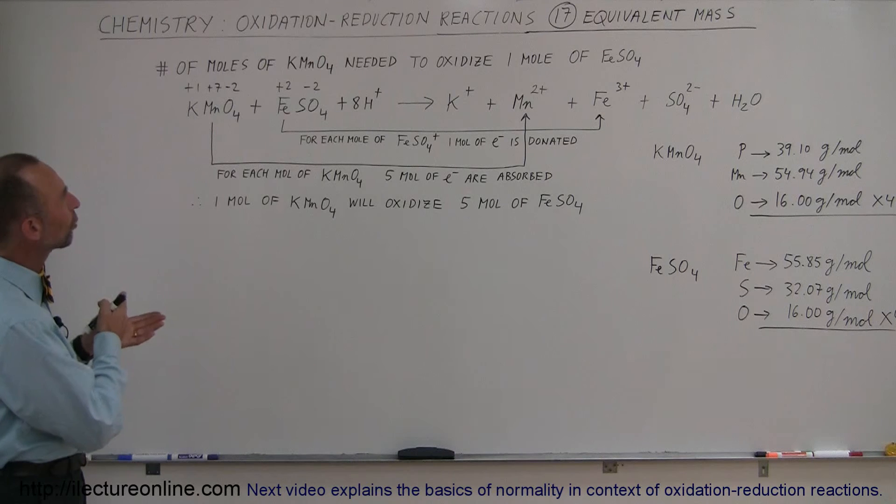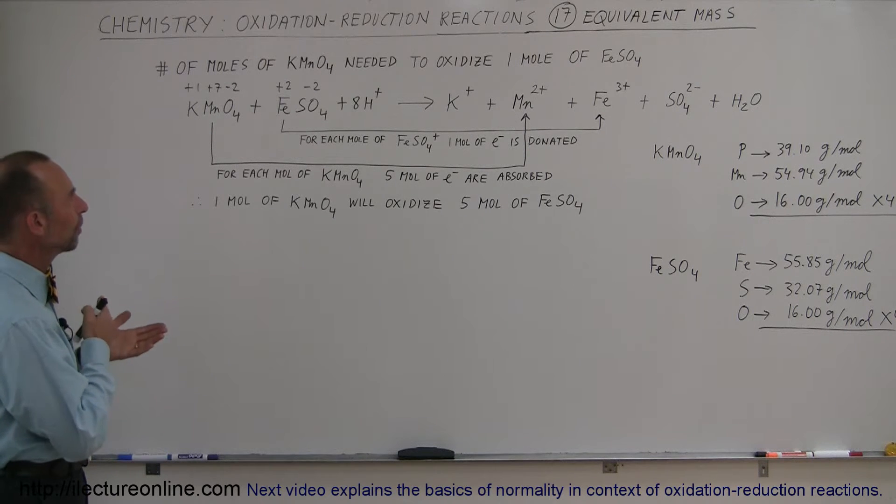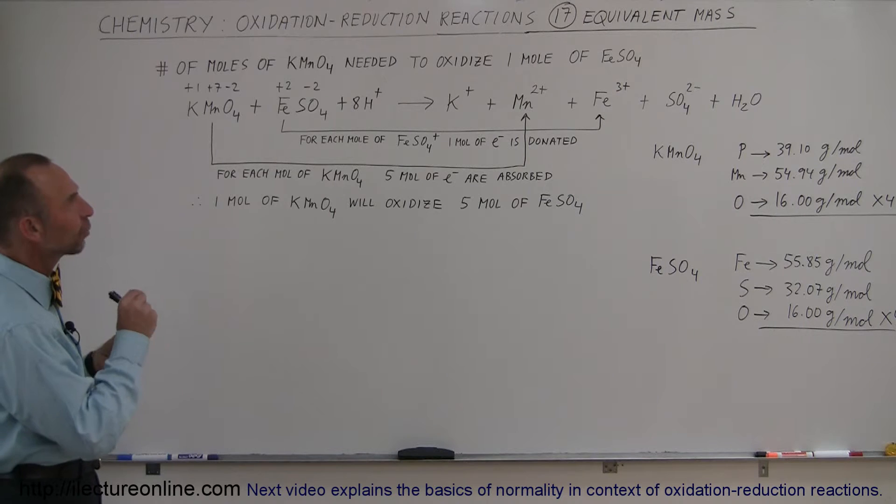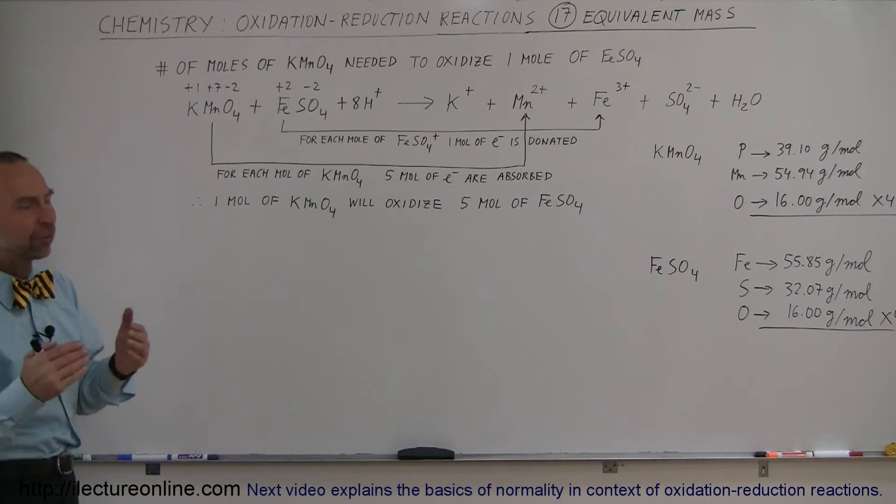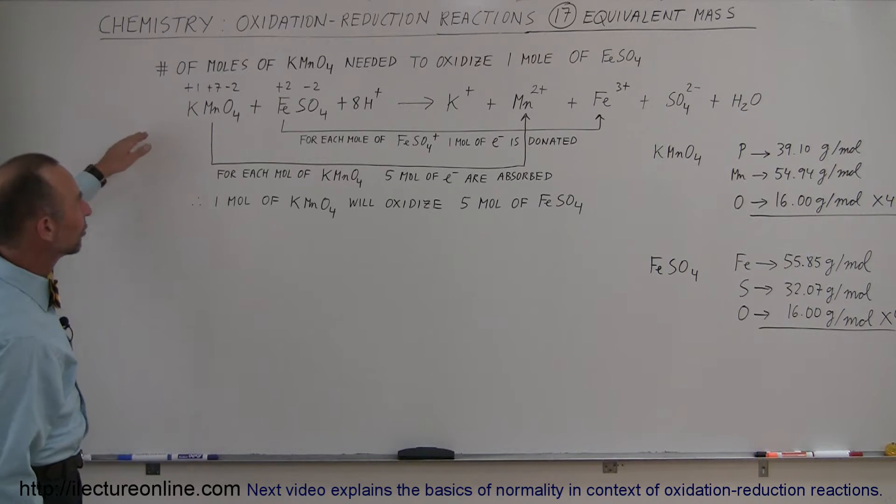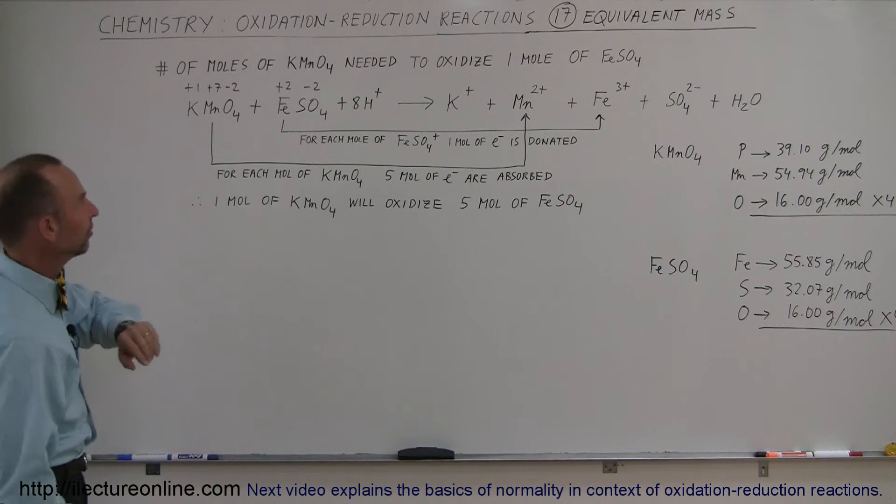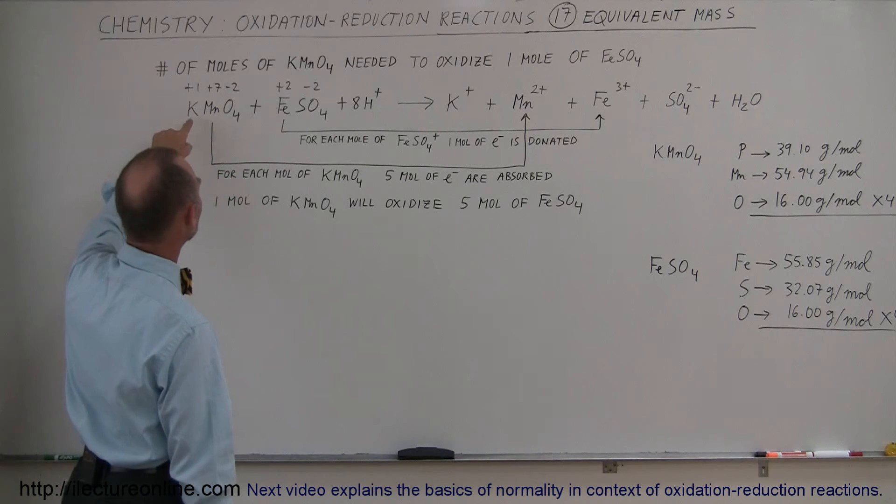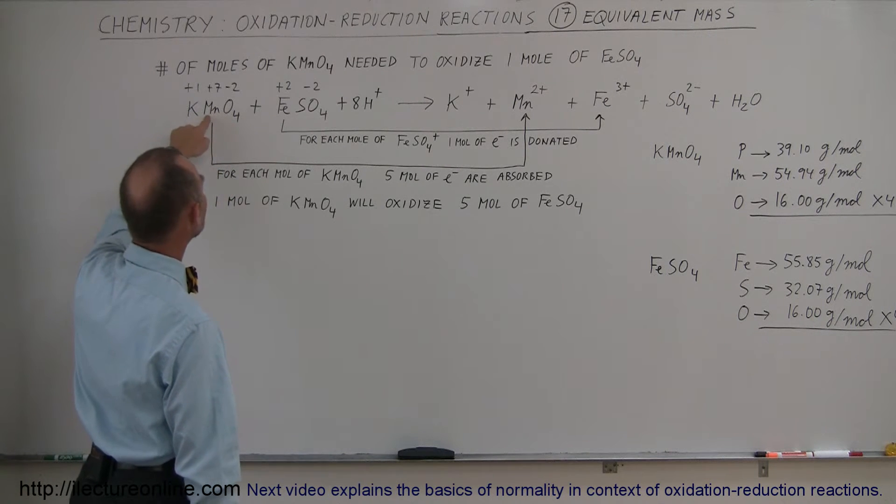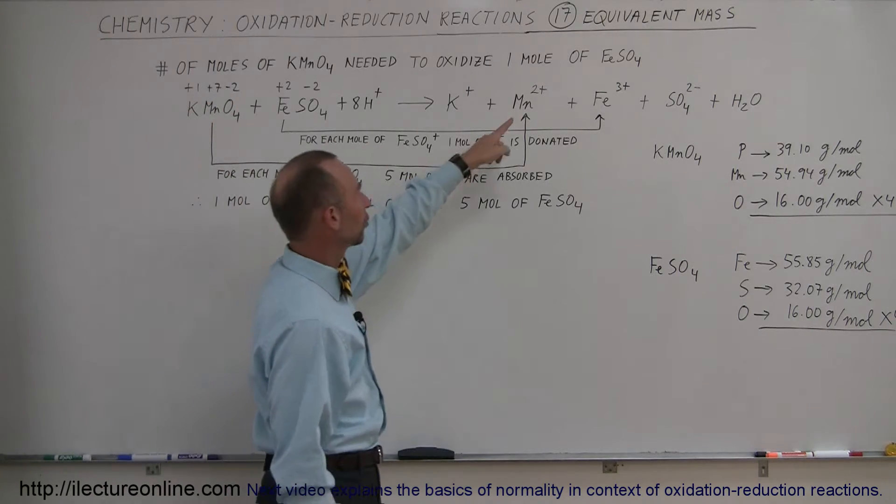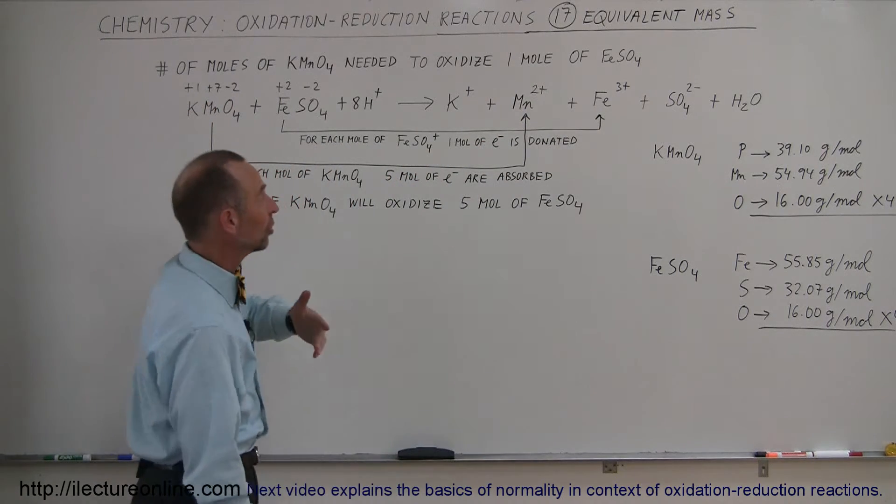The question is: how many moles of potassium permanganate are needed to oxidize one mole of iron sulfate? As we saw in the previous example, here's the unbalanced reaction. You can see that for the potassium permanganate, the manganese goes from a +7 state to a +2 state in an acidic solution.